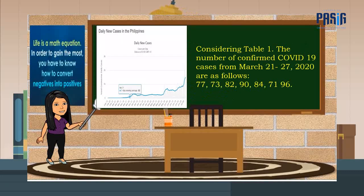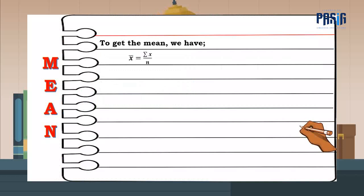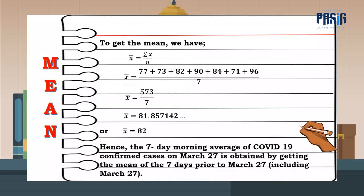Considering Table 1, the number of confirmed COVID-19 cases from March 21 to 27, 2020 are as follows: 77, 73, 82, 90, 84, 71, 96. To get the mean, we have the following. Hence, the 7-day morning average of COVID-19 confirmed cases on March 27 is obtained by getting the mean of the 7 days prior to March 27, as shown on the next table.